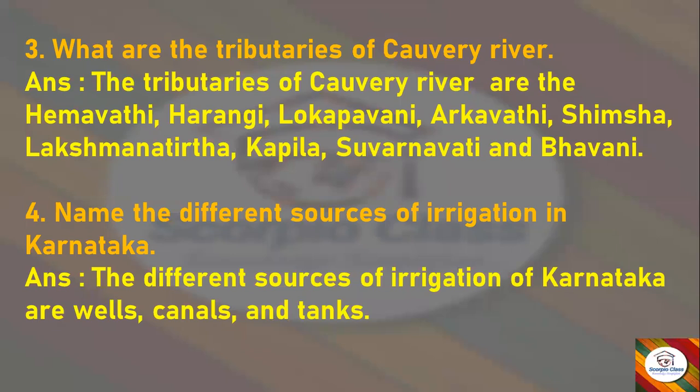Next question: What are the tributaries of the Kaveri River? Answer: The tributaries of the Kaveri River are the Hemavati, Harangi, Lokapavani, Arkavathi, Shimsha, Lakshmana Thirtha, Kapila, Suvarnavati, and Bhavani.